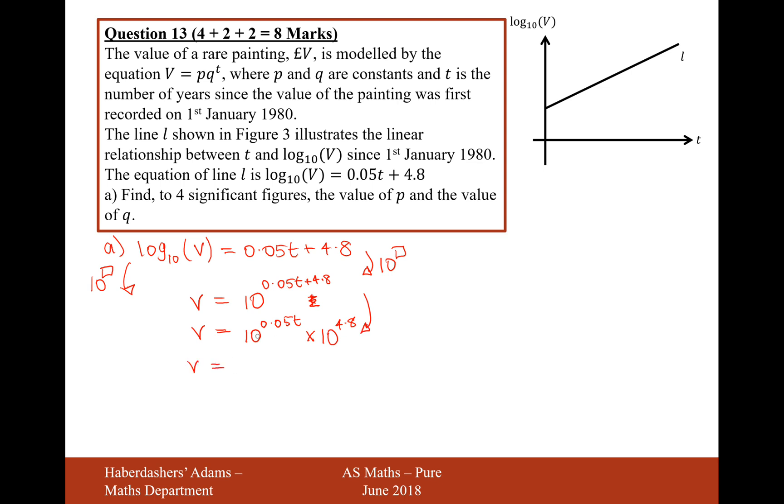So now it's our chance to work out what each of these values are separately. 10 to the power of 0.05, and that is 1.1220. So 1.1220 to the power of T times 10 to the power of 4.8.